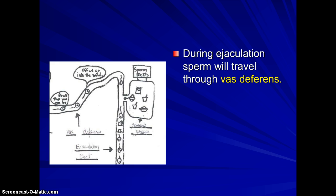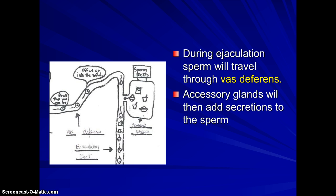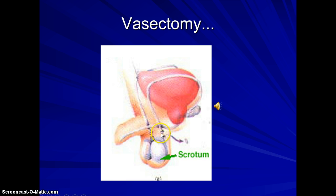During ejaculation, sperm travel up the vas deferens. The accessory glands add secretions to the sperm — semen is actually sperm plus these secretions. When a male has a vasectomy, the vas deferens is snipped and cauterized, so no sperm can be released from the testes. However, a male can still ejaculate the secretions from the accessory glands. Some people have the myth that a vasectomy ruins a man's sex life, but in most cases it actually improves it since the fear of pregnancy is removed, and ejaculation and sexual pleasure remain the same.